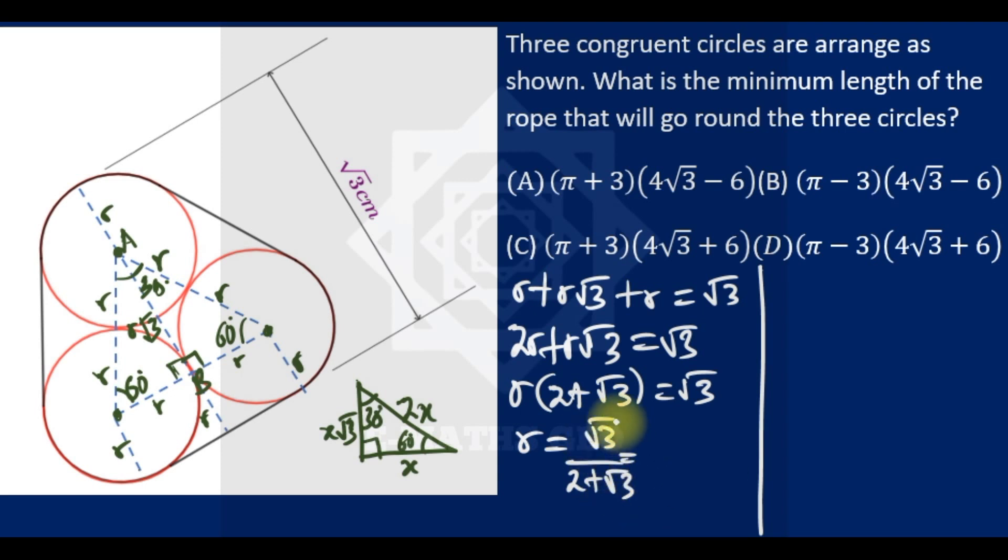And if you rationalize, multiplying numerator and denominator by the conjugate of the denominator, which is √3 times (2 - √3), using difference of two squares, 4 minus 3 is 1. So our R is 2√3 - 3. That's our radius.